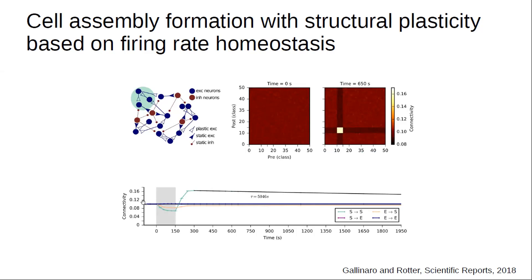Looking at how connectivity changes over time: before stimulation the average connectivity is at 10% — the network average. During stimulation we see a decrease, because these neurons are firing above target rate. Afterwards there is an overshoot — shown in green for connections within stimulated neurons — indicating that the assembly has been formed. If we wait, this strong connectivity within stimulated neurons decreases back to baseline, but on a much slower time scale than the creation process. The assembly is created much faster than it decays.